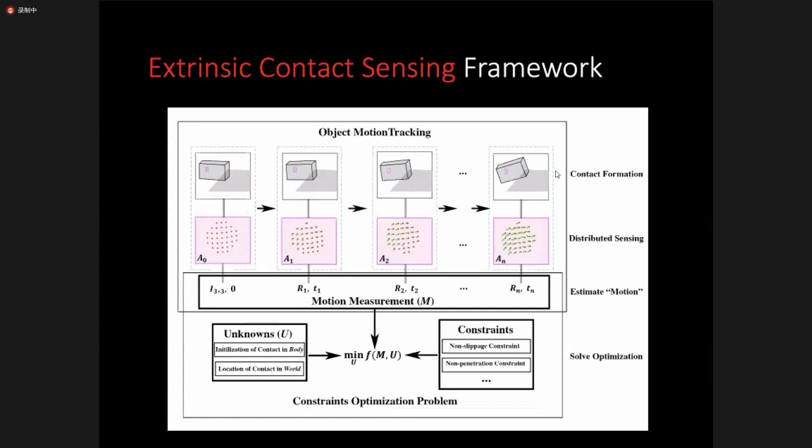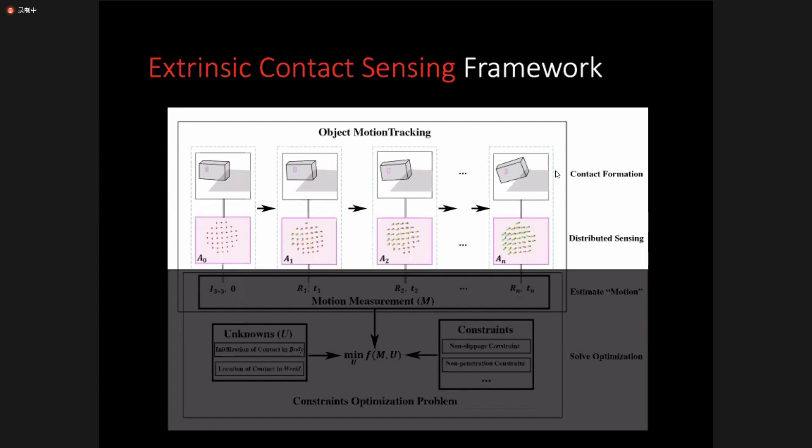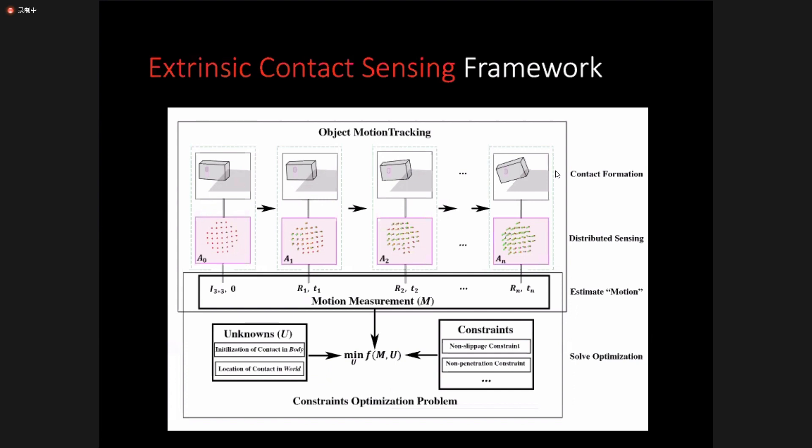In the forward path, the extrinsic contact sensing problem is formulated into a kinematic constraint optimization problem. For example, as shown on the top, an object is contacting with the environment on the table edge, and the object is rotating around that edge. What we can measure with the tactile sensors are the 3D motions of some points within the grasping contact patch. And we track the object's motion from this motion field. Then finally, we localize the extrinsic contacts by solving a constraint optimization problem, with the location of the contact as unknowns.